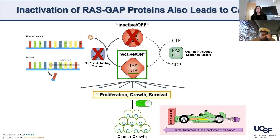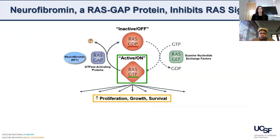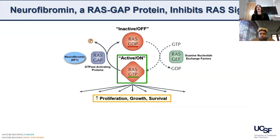Back to our race car analogy - what that equates to is that you can still put the gas on, but now you have no brakes. It's like someone cut your brakes. So you have the gas but no brakes. Basically, these are two different mechanisms of how this kind of signaling can lead to cancer. What I'm interested in is actually one of the proteins that turns off this pathway, and it's called neurofibromin. It is this huge protein, and it basically turns off this RAS signaling.